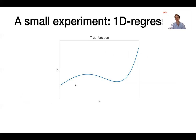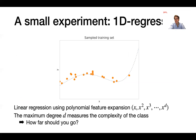Let's start with a simple example: a one-dimensional regression problem. We have a ground truth function in blue that we would like to recover. However, we only observe noisy realizations of this function at some points — the orange points. To recover the ground truth, we will perform linear regression using polynomial feature expansion, considering features x, x², x³, up to x^d. The question is: what maximum degree d should we use? The degree d measures the complexity of the model class.